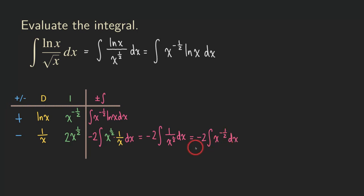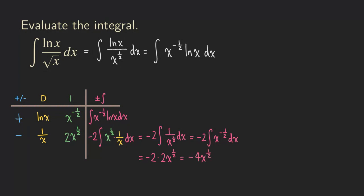It turns out we already performed this integration in the table, so we just copy the result. The antiderivative of x to the negative 1/2 is 2x to the 1/2. So our result is negative 2 times 2x to the 1/2, which simplifies to negative 4x to the 1/2. The plus C is omitted for now until the final answer.